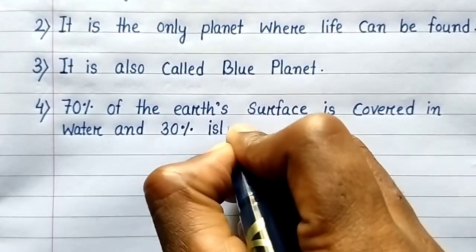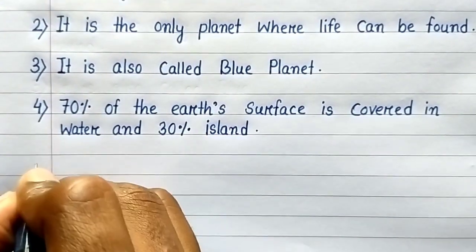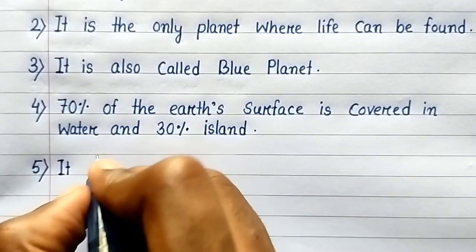Fourth line: 70% of the Earth's surface is covered in water and 30% island.